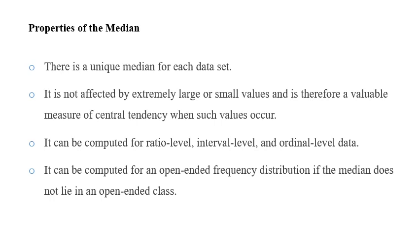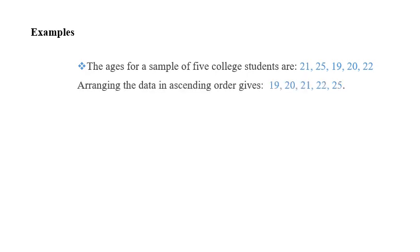Let's have an example of this. The age for a sample of five college students are 21, 25, 19, 20, 22. After rearranging, we can see that we start with 19 and end up with 25. The middle point is number three in this location. We can see that the value is 21, so 21 in this case is the median.